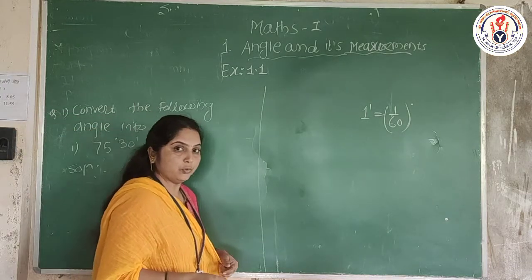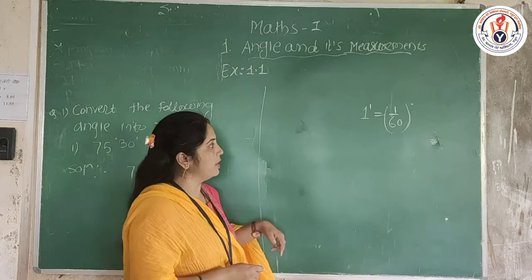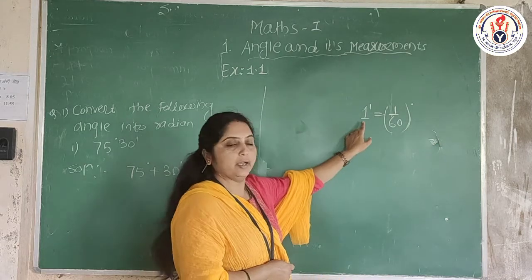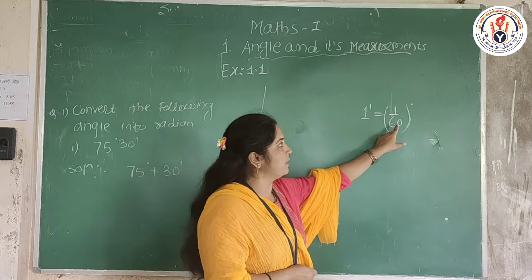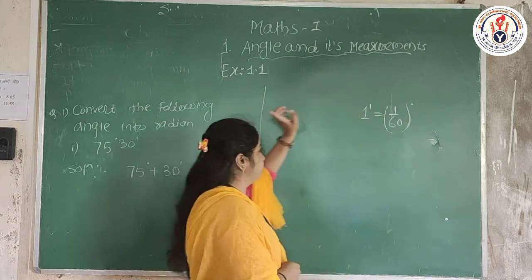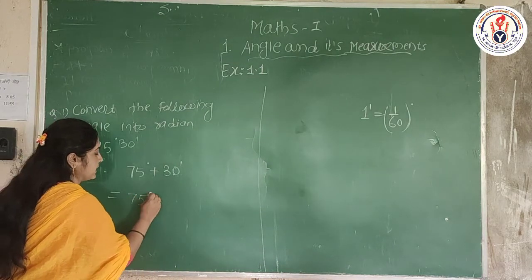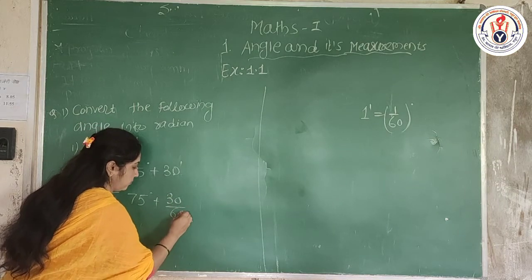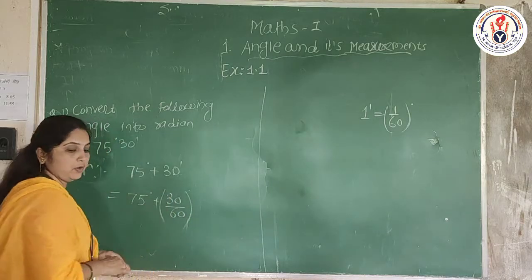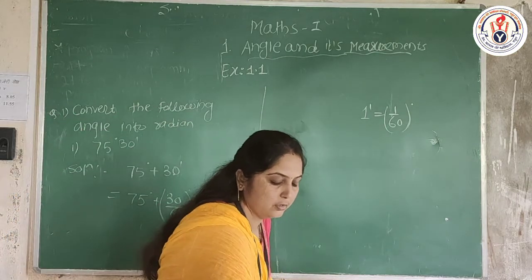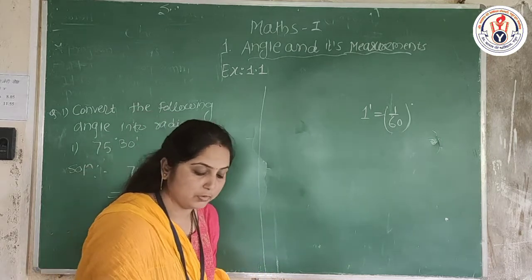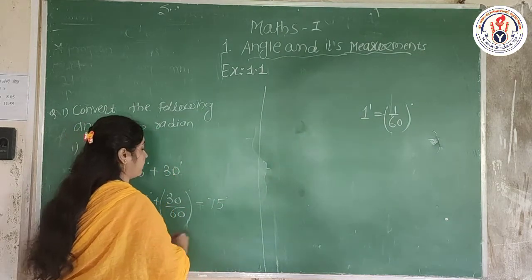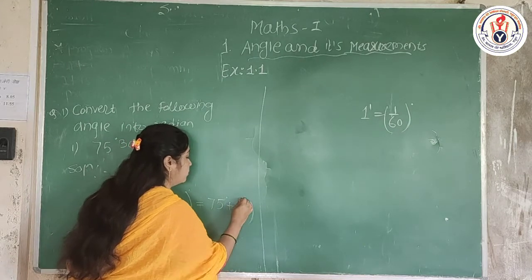As we know, according to the definition of 1 minute, 1 minute is 1 divided by 60th part of a degree. Therefore we can write 1 minute equals 1/60 degree. So we write 75 degrees plus 30 minutes, and converting 30 minutes: 30 × (1/60) = 1/2 degree. So this becomes 75 degrees plus 1/2 degree.